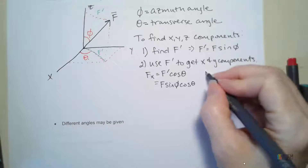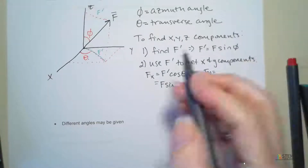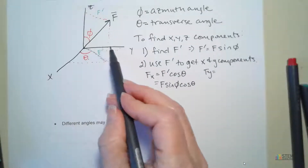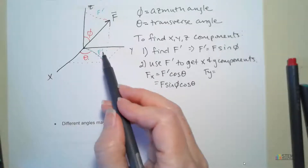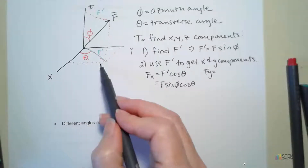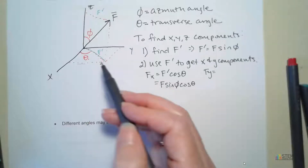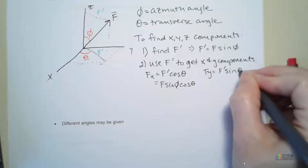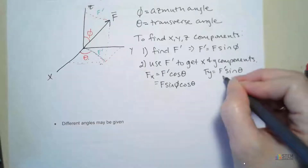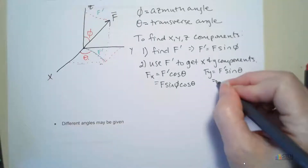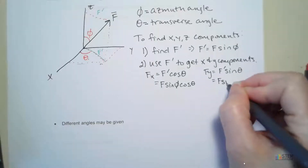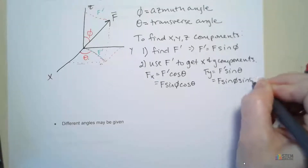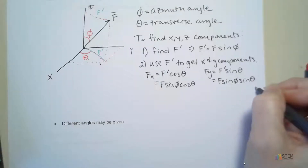Now for Fy, you're going to do the same thing. Fy is this component over here, and notice that's opposite that angle theta. So here we're going to have F prime sine theta. We already know what F prime is, so plugging it in gives us F sine phi sine theta as your Y component.